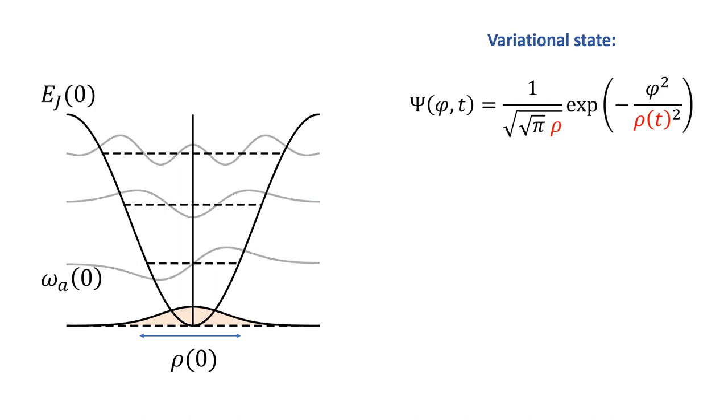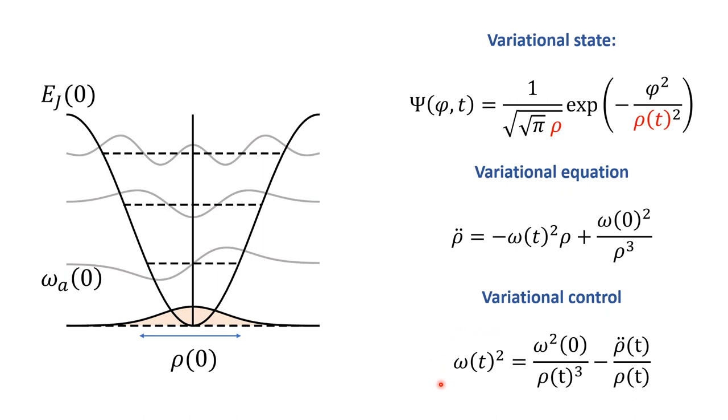A very accurate way to describe the squeezing is to use the Gaussian variation of wave function to model the dynamics of the ground state of the transmon. The width of this Gaussian evolves in time. The evolution depends on how we tune the frequency of the transmon in time as well. However, we can see this equation in a different way, as a way to design the control for a given variation of the transmon wave.